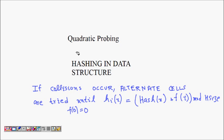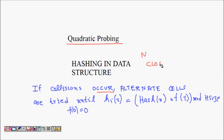In this lecture we are going to learn about quadratic probing — a strategy for collision resolution in hashing. Collisions are a big problem in hash tables because if the number of elements you insert is greater than the hash table size, there will be collisions. In closed hashing, when a collision occurs, we try out alternate cells until we find space for insertion.